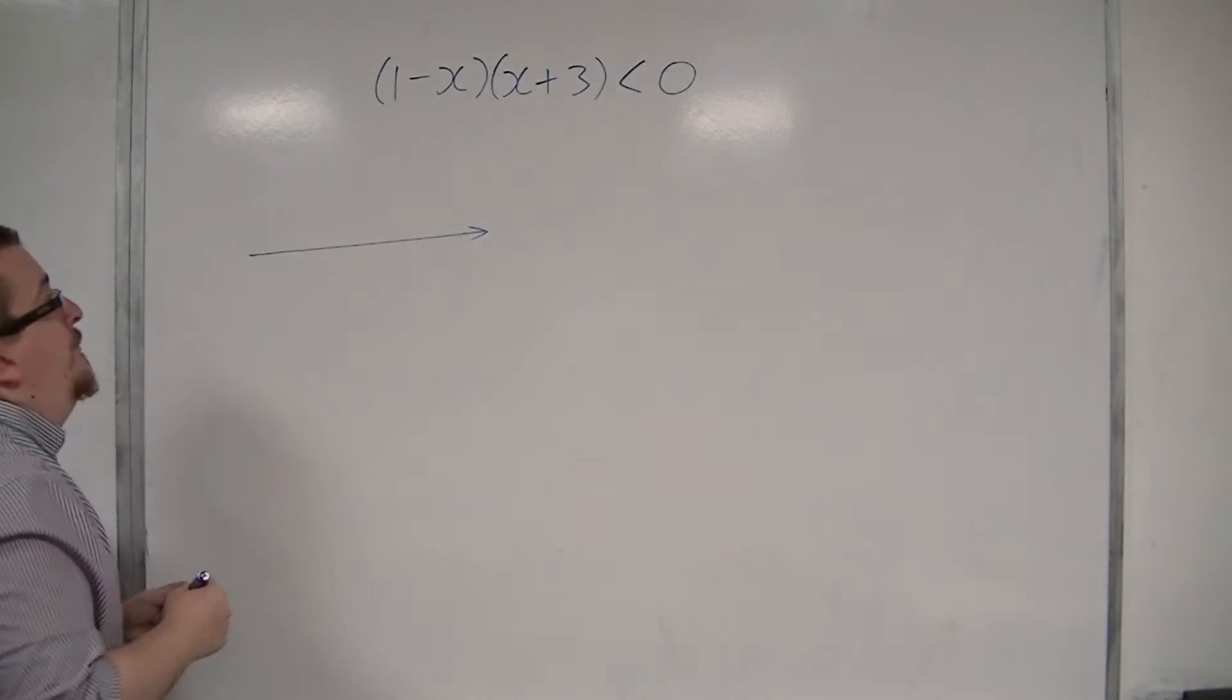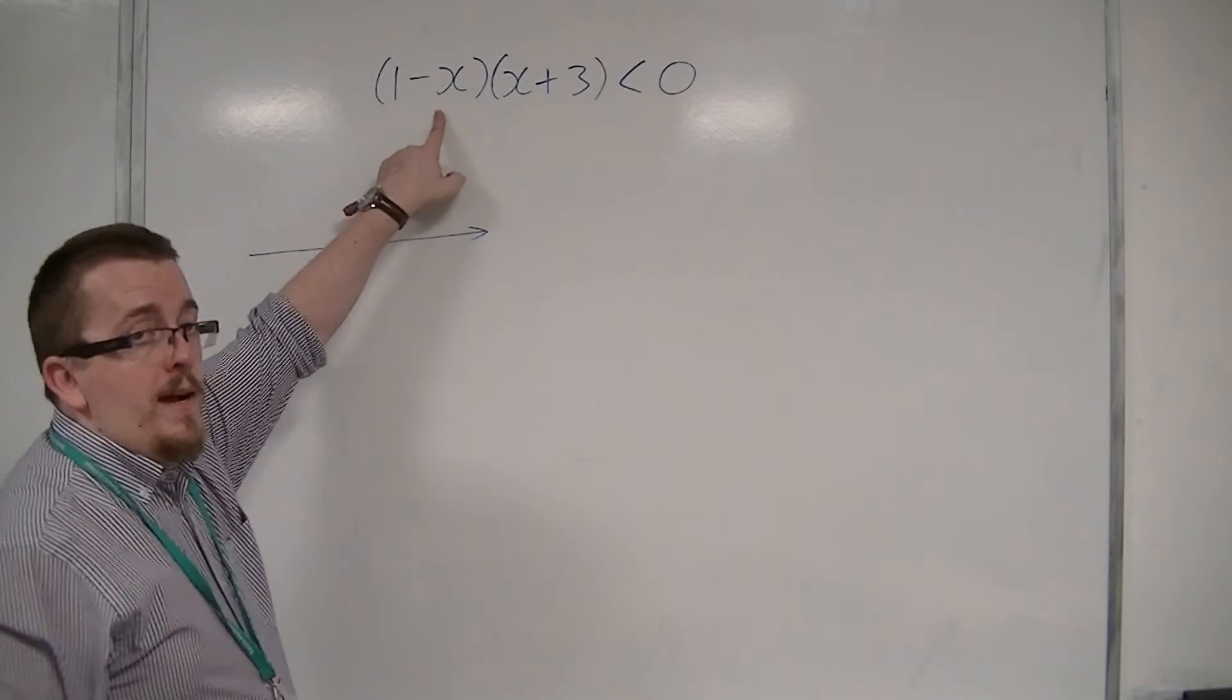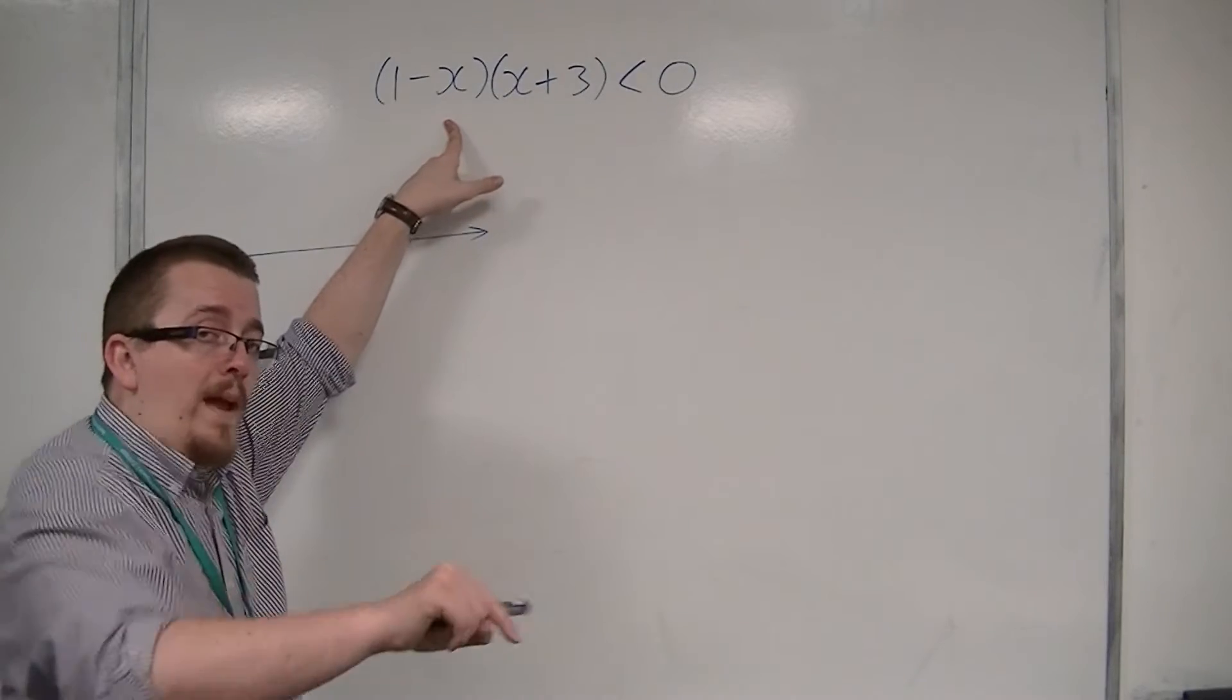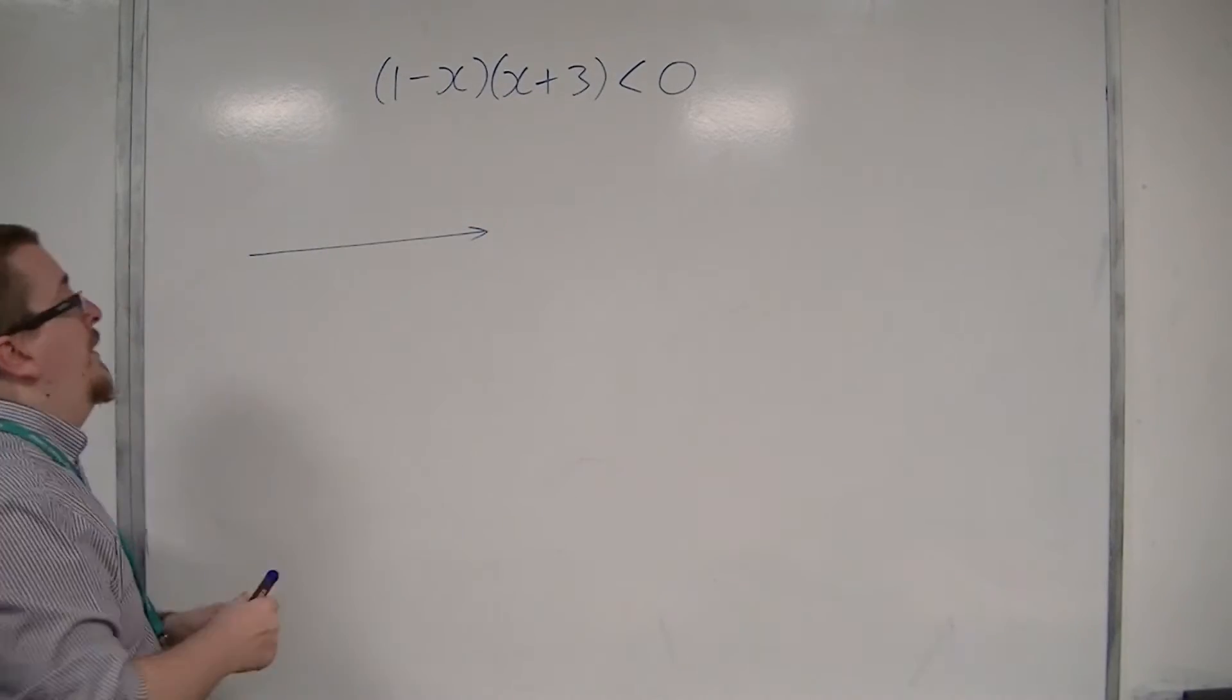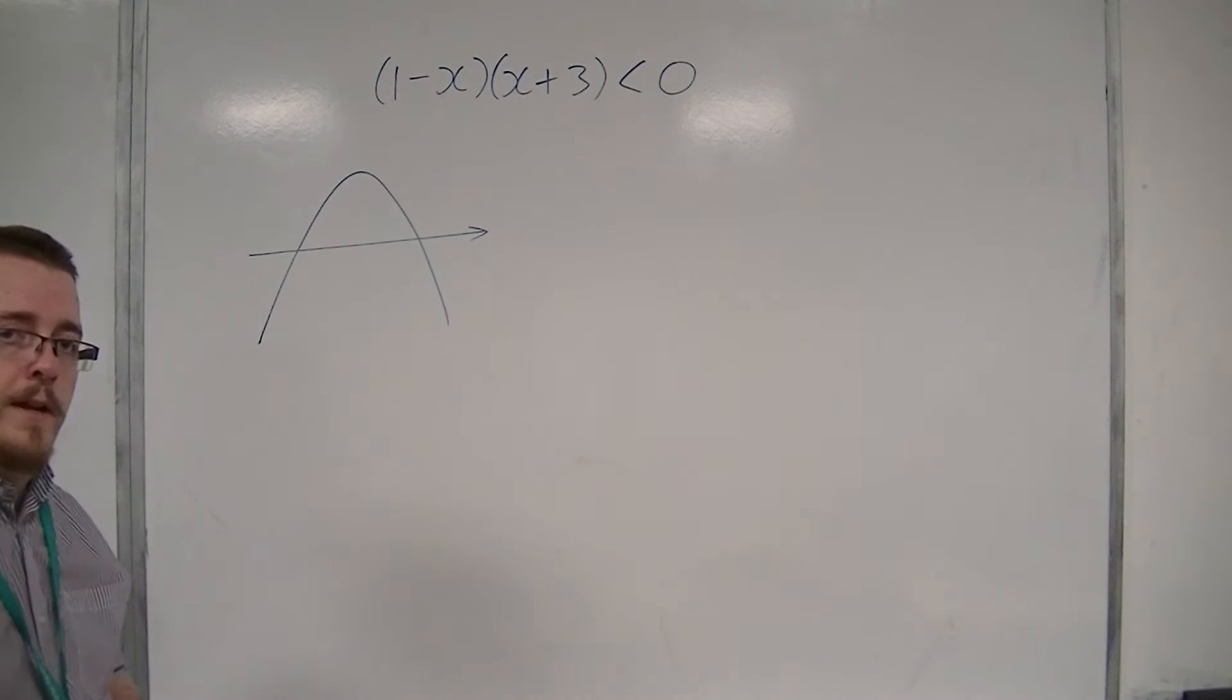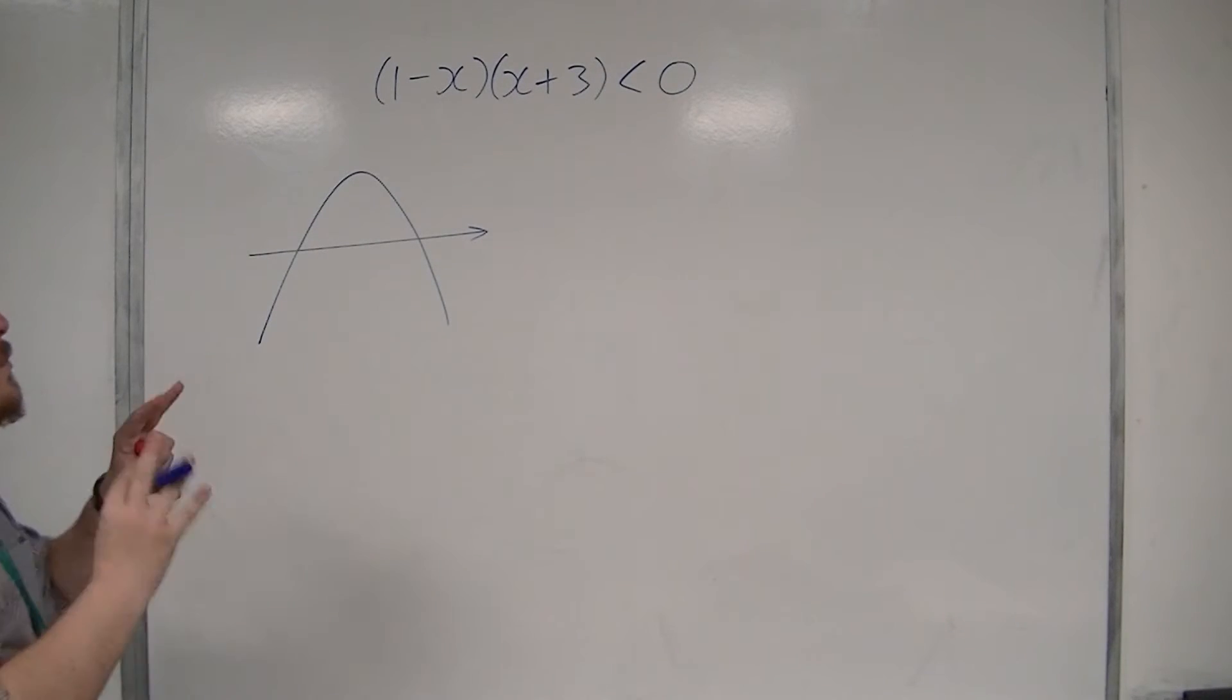Because we have a minus x, when you multiply this out you get a minus x squared. That means the curve, the parabola, is like this. It is upside down to all of the other problems we've considered.